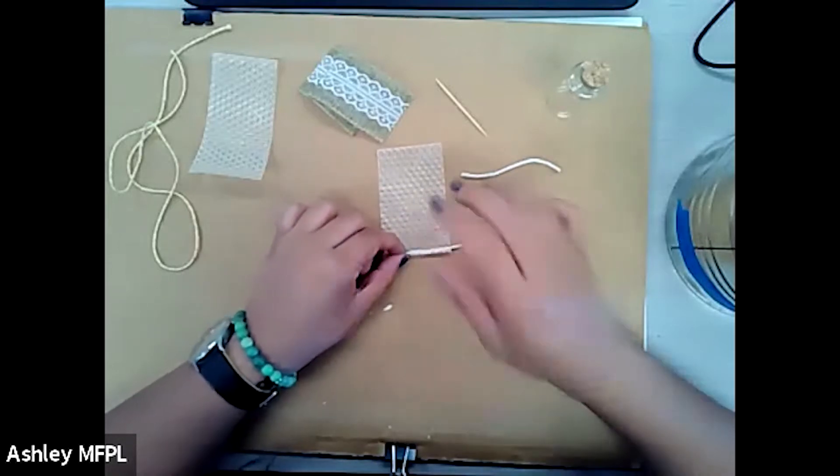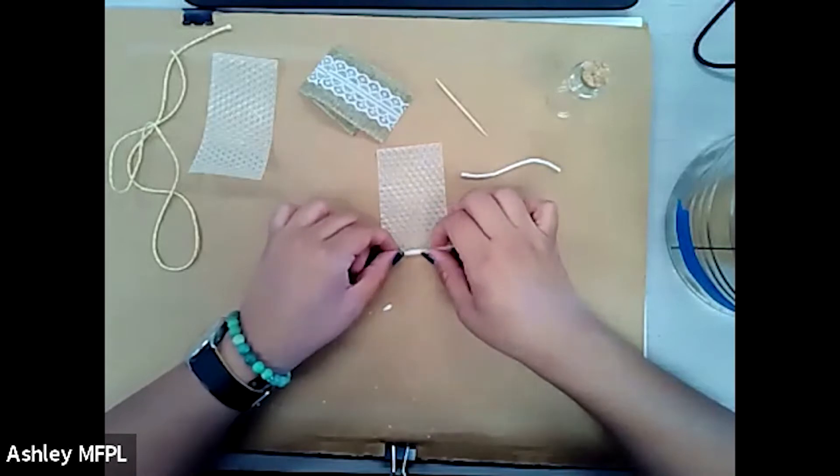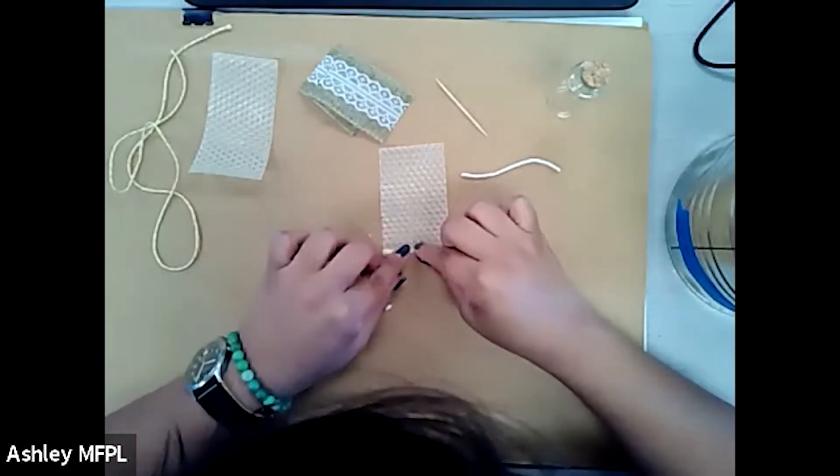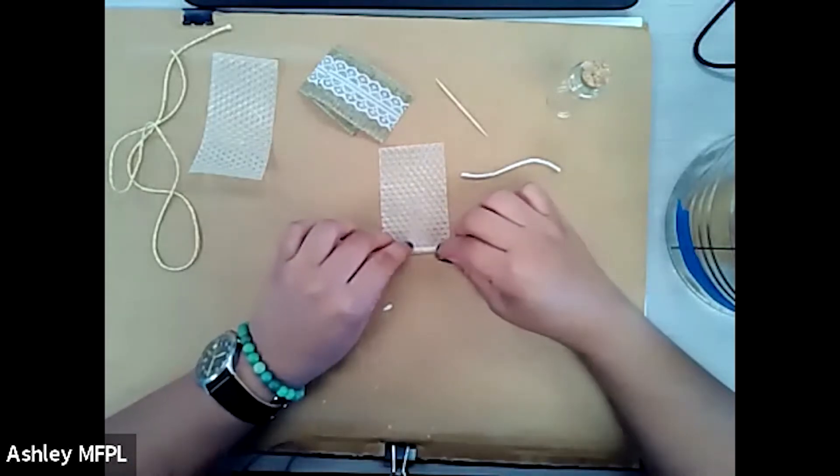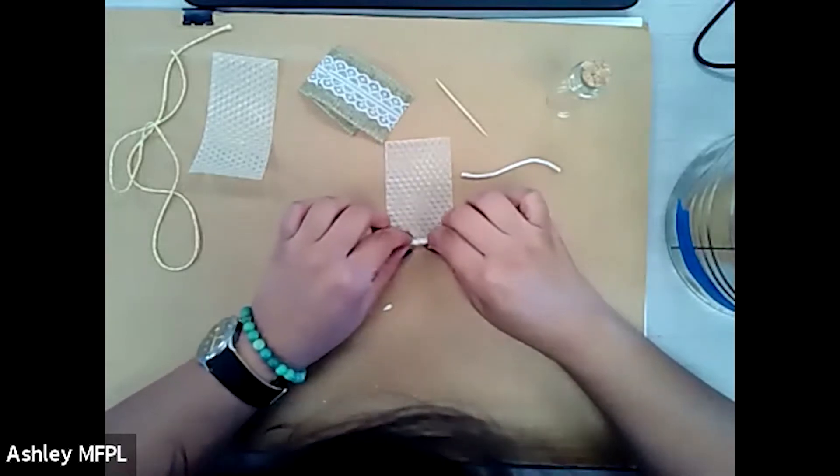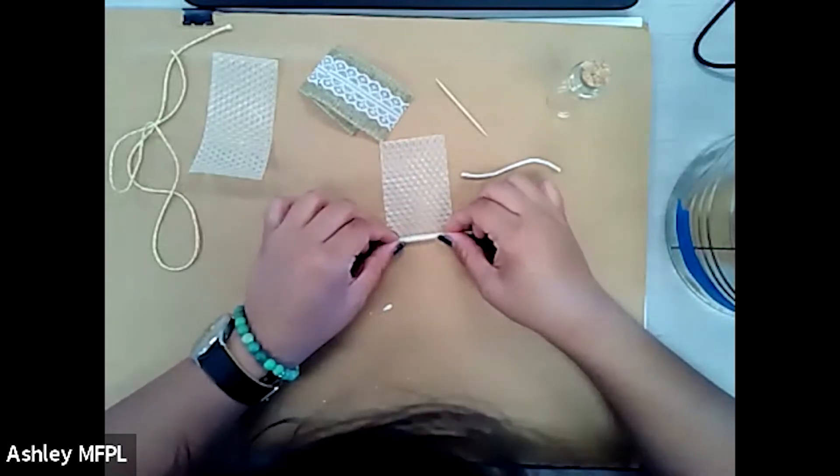You want to be firm, but you don't want to push too hard or you'll break it. And the tighter you roll it, the longer your candle will burn. So that's why you want it as tight and as close to the wick as possible.